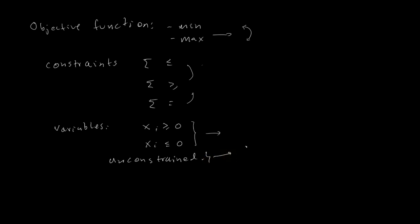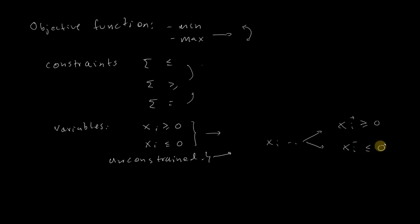In the case of unconstrained variables, if xi can be any possible value, we can transform that into two variables: one called x-plus, which is greater than or equal to zero, and another variable x-minus, which is less than or equal to zero. So we can transform problems into those forms.